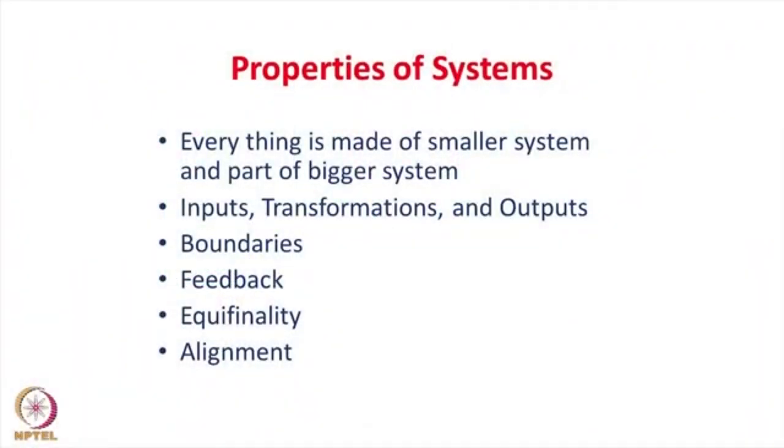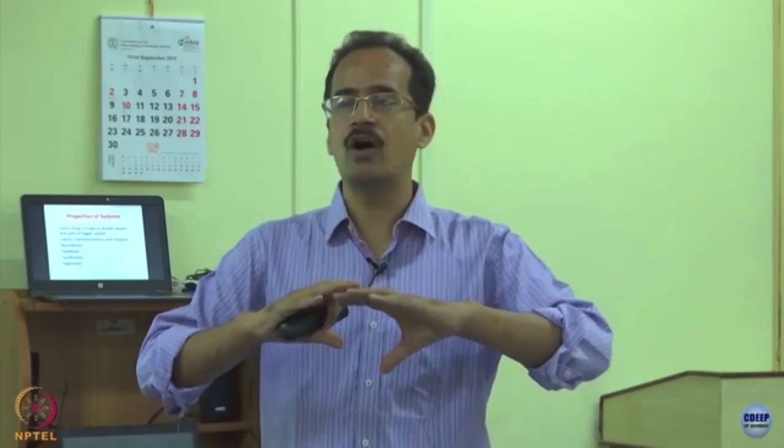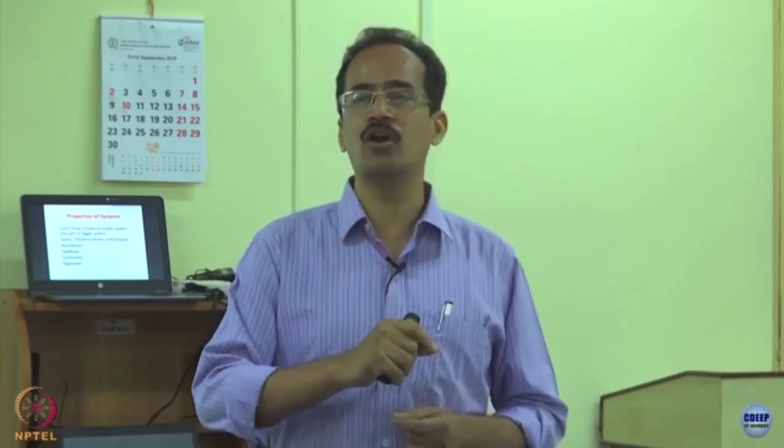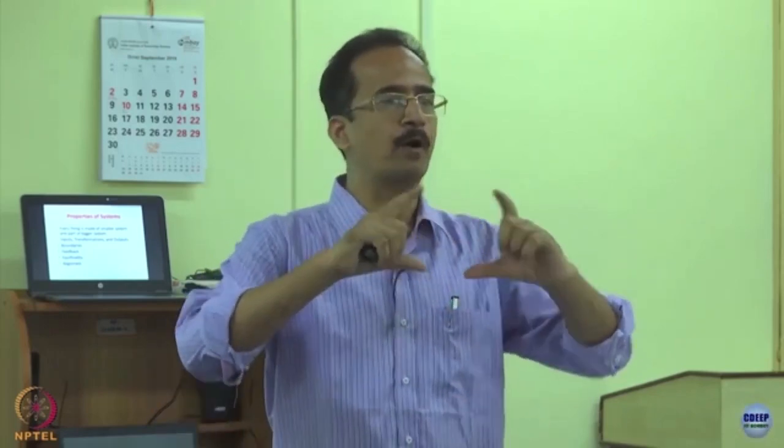There is always input, transformation, and output. Does that mean we can never understand any reality? Because if everything is connected to everything else, we cannot study anything — but that is also not the case. Systems thinking and systems science suggest that, though everything is connected, there is a possibility of making some artificial boundaries. The great systems thinker Bateson says that boundaries are necessary but they are not necessities. We can draw a tentative boundary and look at the interaction of certain variables within it to get a representative description of the system.